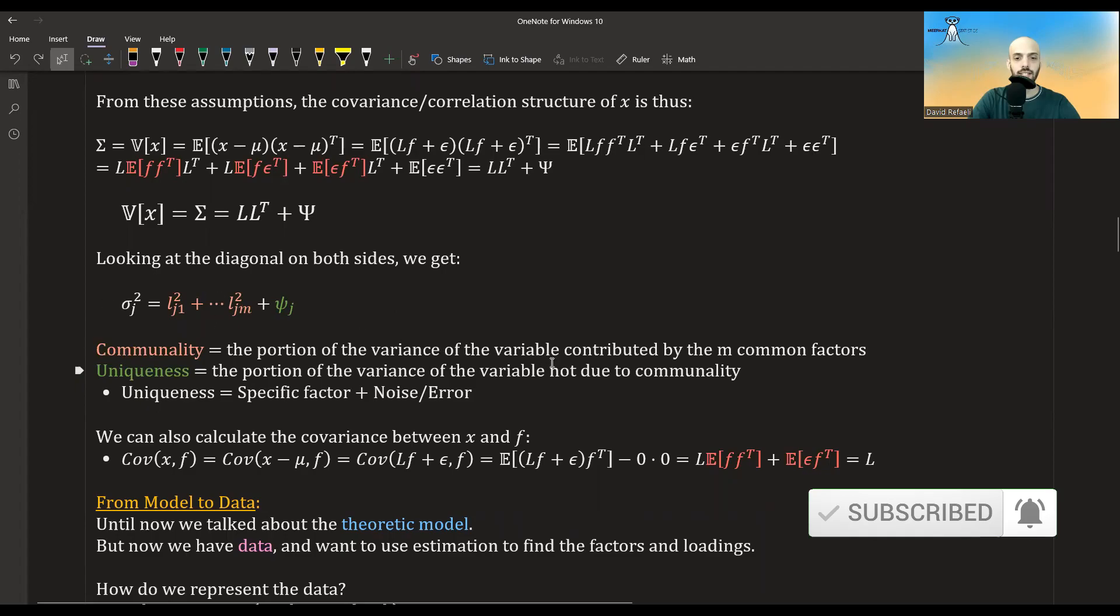And this thing over here, we will name it uniqueness, and this is the portion of the variance that is not due to communality, it's actually due to some specific factor, so some influence that comes from the specific variable, a specific factor that is related to this variable, and perhaps some noise or measurement error. Okay, so we can decompose the variance into a communality, variance that is due to the common factors, and uniqueness, variance that is not due to the common factors.